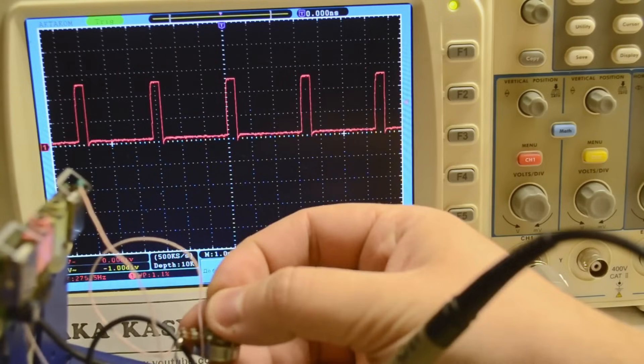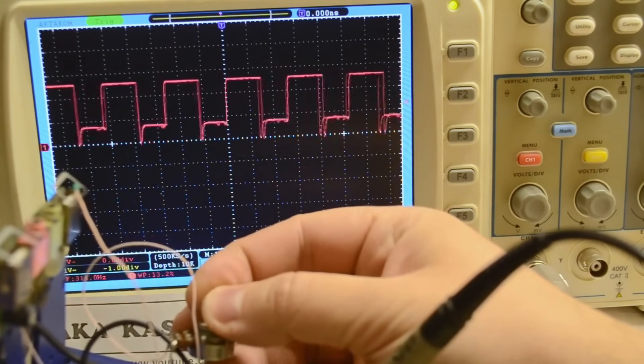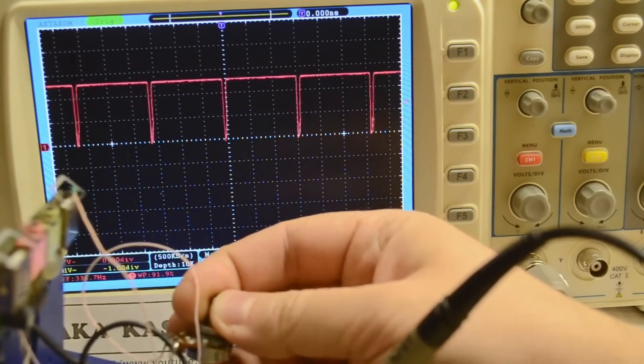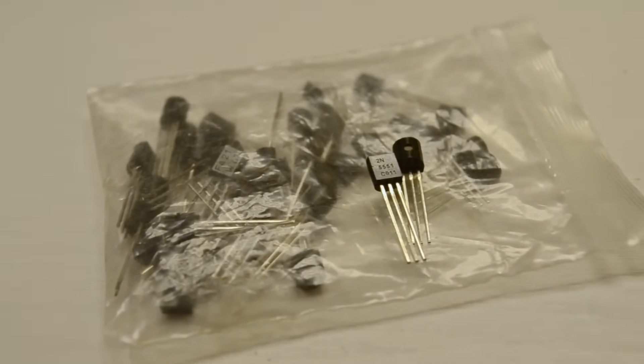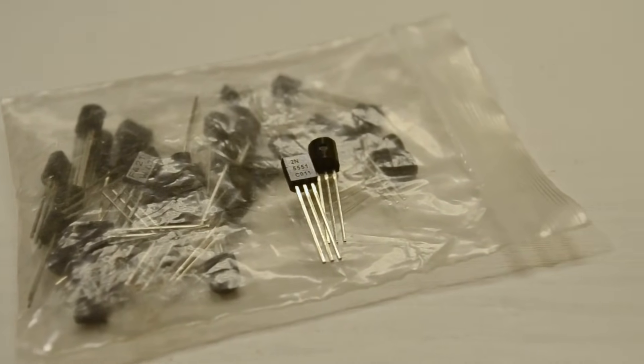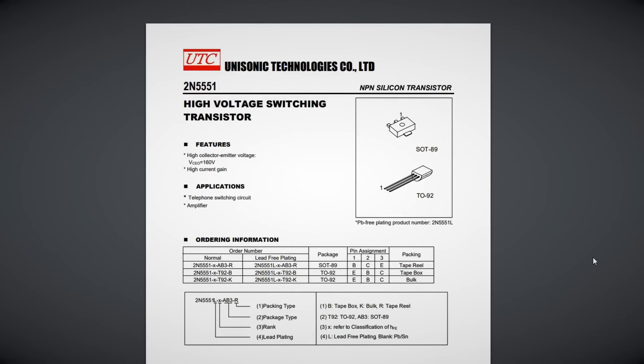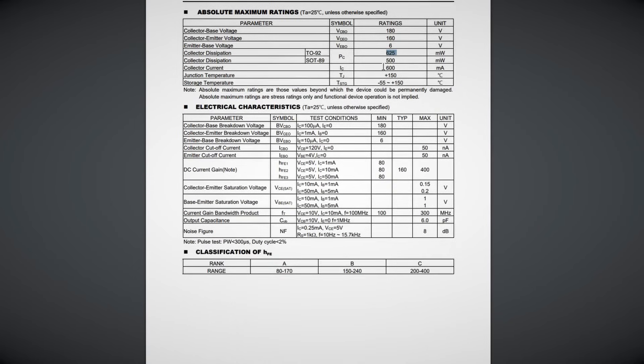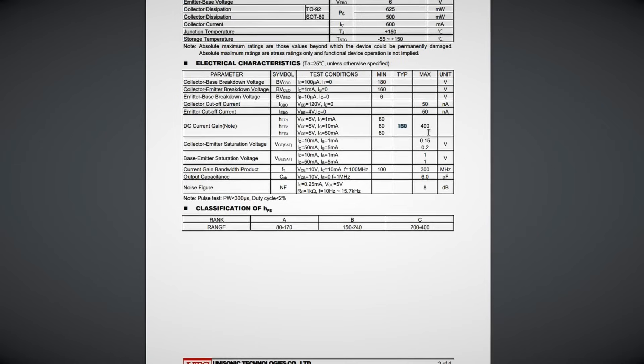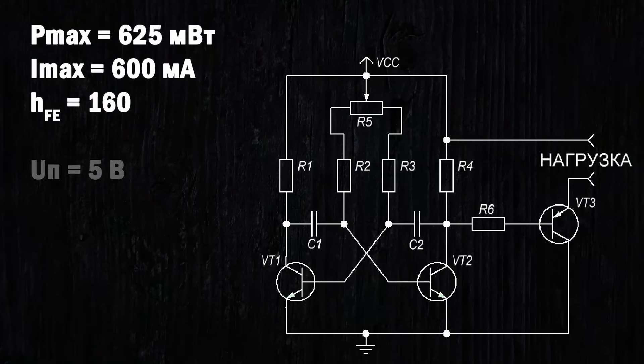Let's briefly go over the calculation of the values. First, we look for two identical NPN transistors. For example, I happen to find two N5551S, an A292 package. We find the datasheet for it and note down the value of the maximum dissipated power, 625 milliwatts, maximum collector current 600 milliamps, and the current gain or amplification factor of 160. And, of course, let's decide on the supply voltage, for example, 5 volts.